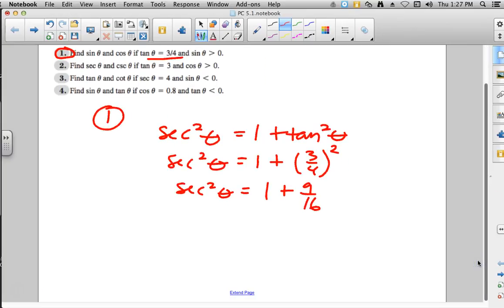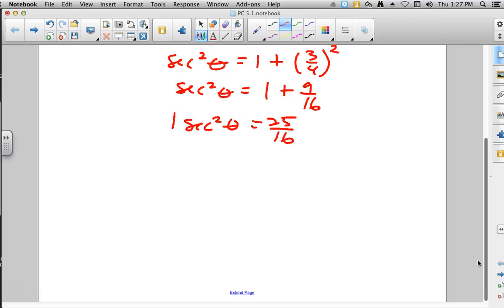Well, if we add 1 to 9/16, 1 is the same thing as 16/16, so we will get 25/16. Then to get rid of the square so we can work with this, we would take the square root and secant of theta would equal plus or minus 5/4. But these are sides for a triangle, so we know we can put that as 5/4.